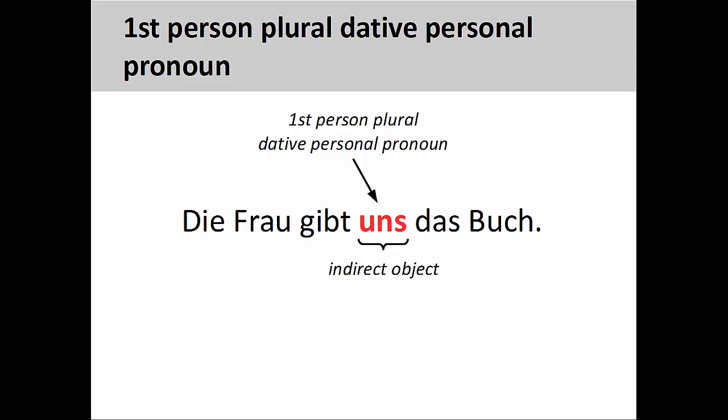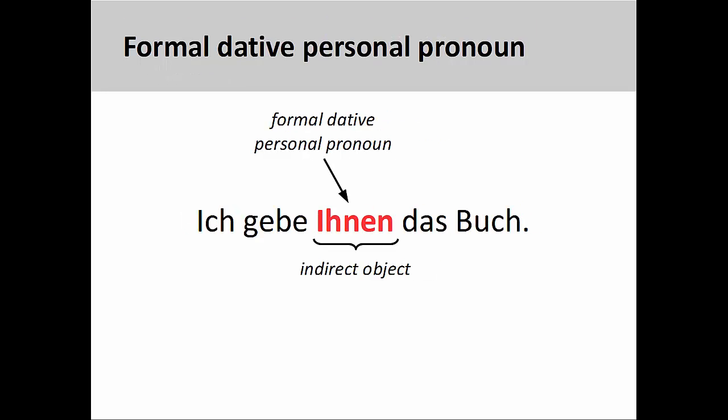In the sentence die Frau gibt uns das Buch — the woman gives the book to us — the first-person plural dative personal pronoun uns signals that I am situated in a group of people that functions as the indirect object of the sentence. Finally, the sentence ich gebe Ihnen das Buch — I give the book to you — looks similar to the earlier sentence, but note that the first letter in Ihnen is capitalized. This means that Ihnen is a formal dative personal pronoun, and the person being addressed is a stranger, a business associate, or somebody you just met — a person you would want to show respect to. This dative personal pronoun is used both in the singular and plural.